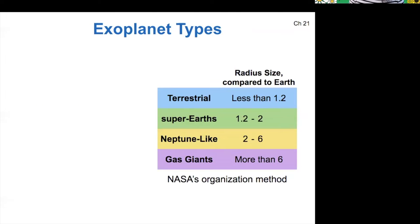NASA classifies exoplanets in this way, by their radius compared to the radius of Earth.